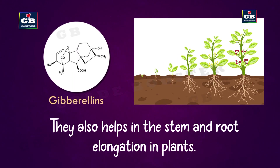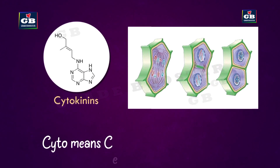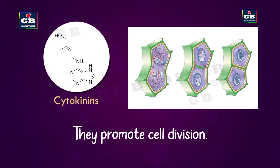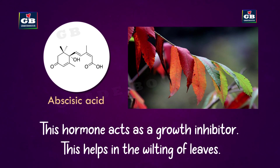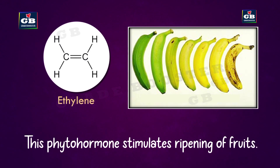Major phytohormones and their functions: gibberellins help in stem and root growth; cytokinins help in cell division and are found in fruits and seeds; abscisic acid slows the growth of plants and causes leaf wilting; ethylene helps fruits to ripen.